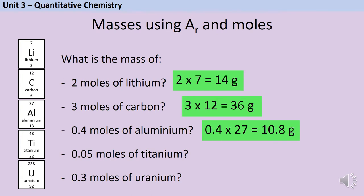0.05 moles of titanium, if one mole of titanium weighs 48 grams, has a mass of 2.4 grams and 0.3 moles of uranium has a mass of 71.4 grams. In each instance we're multiplying the relative atomic mass by the number of moles given in the question.